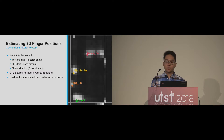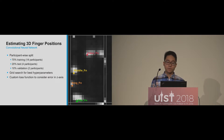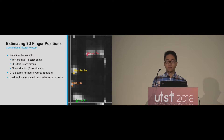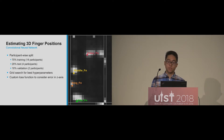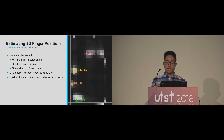We trained a convolutional neural network which estimates the position of the fingertips based on the capacitive images. For model development and evaluation, we split our dataset into three sets. The training set consists of 14 participants and was used to train our CNN. In the grid search, we optimized the hyperparameters of our CNN — such as the number of layers or neurons — to achieve the lowest error on the test set, which consists of four participants. The validation set consists of two participants and was never touched before in this process, and was used once at the end to validate the best-performing model.